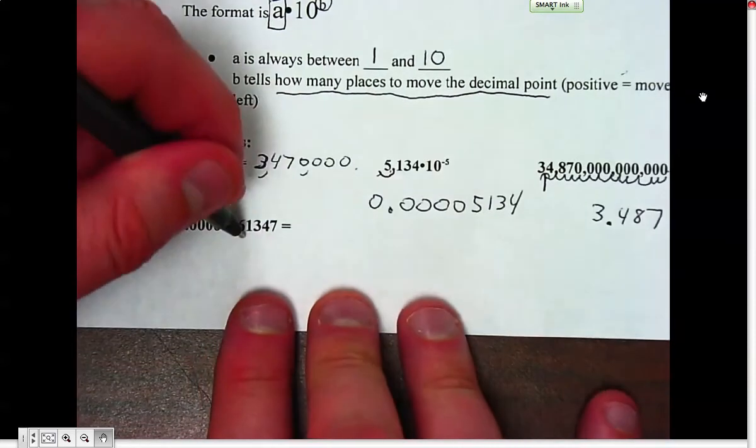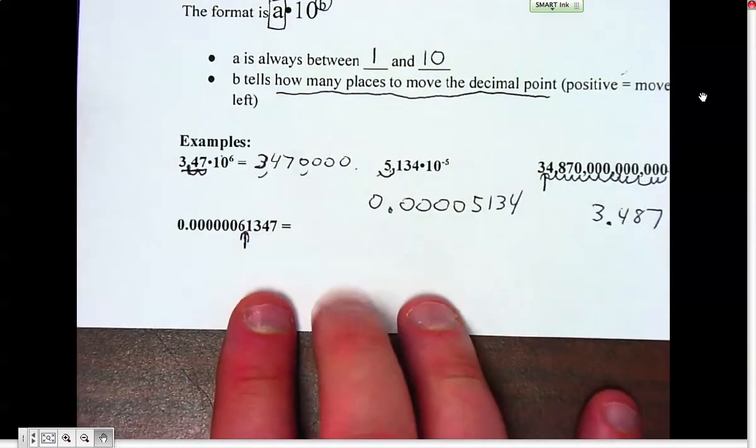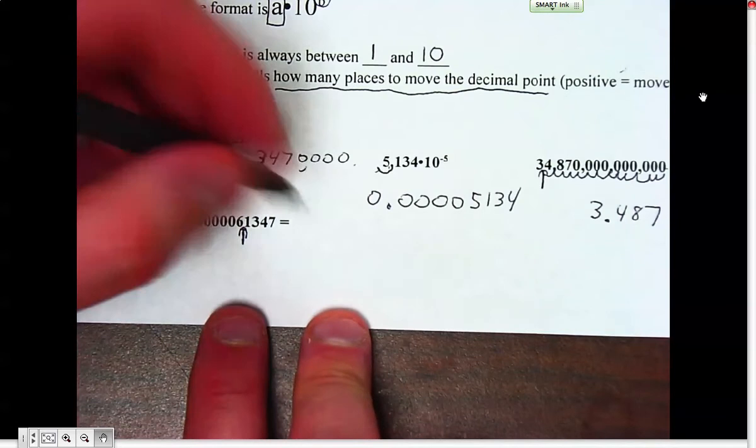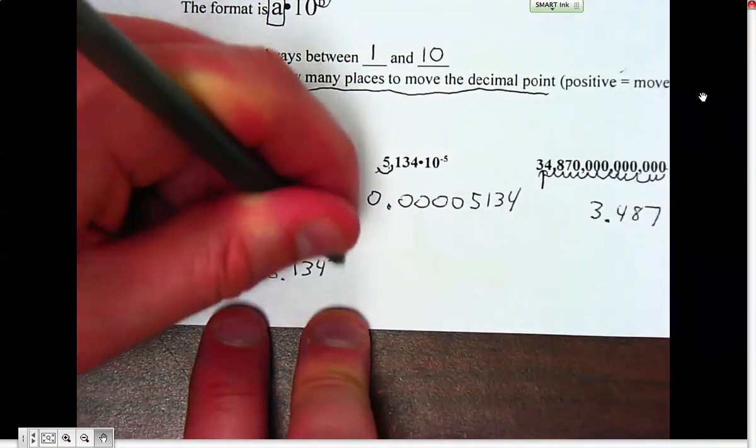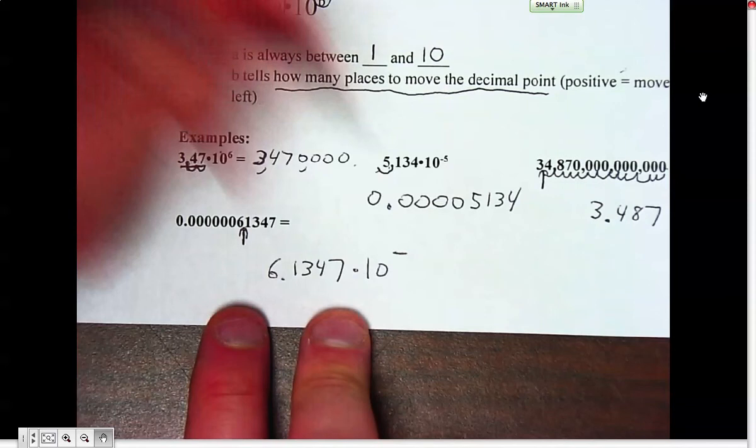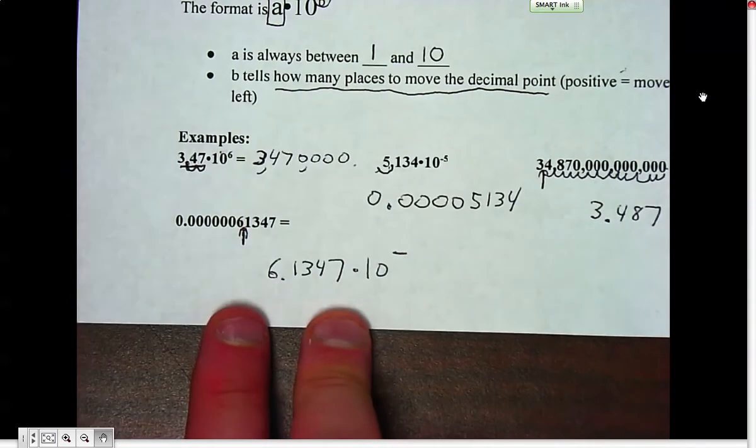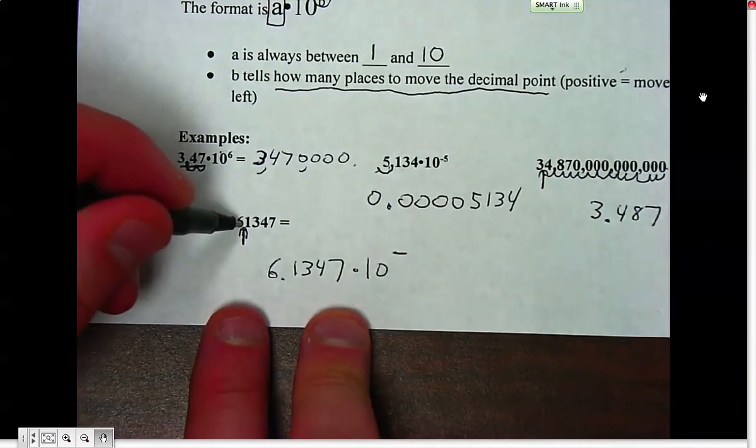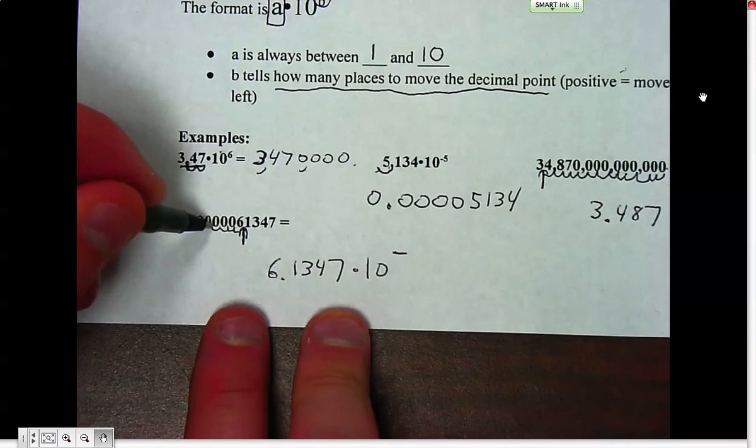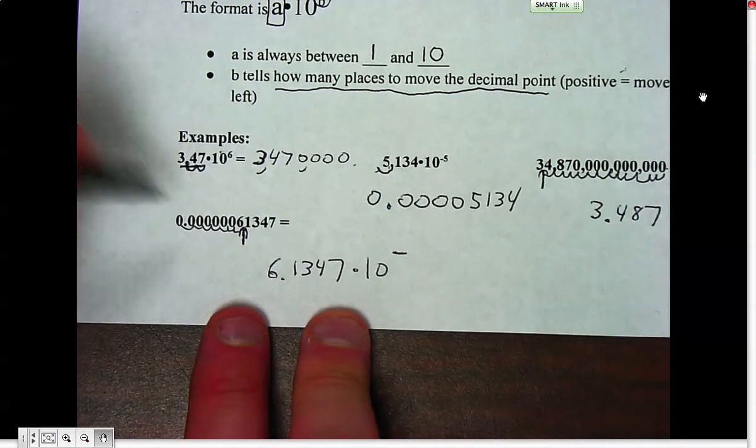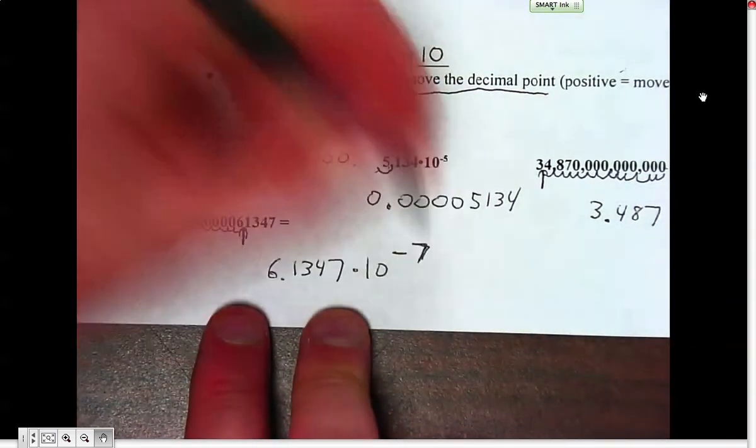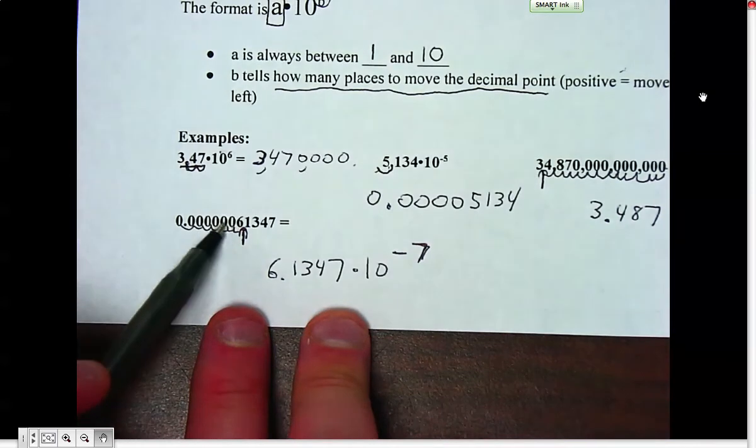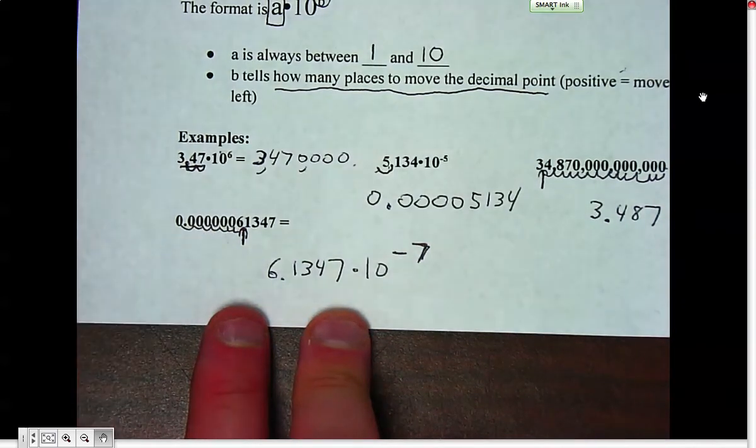For the last one, we want the decimal point between the first and second non-zero numbers, so I'm going to have 6.1347 times 10. Since I have to move the decimal point to the left, it's going to be negative. I'm going to count 1, 2, 3, 4, 5, 6, 7 places to get back there, so times 10 to the negative 7th. That makes sense—there are 1, 2, 3, 4, 5, 6 zeros in there.